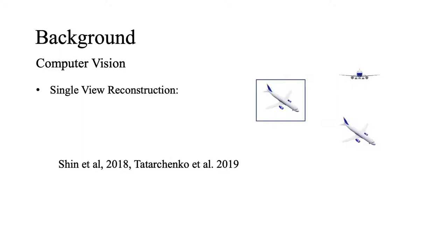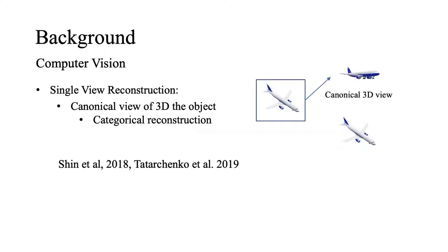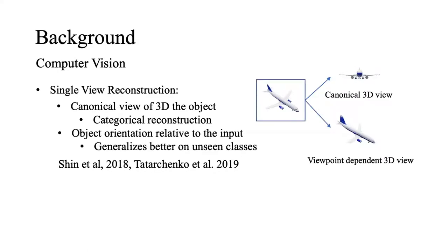single-view reconstruction is becoming a hot topic. Shane and Tatarchenko have classified them into two categories based on their output coordinate system. If a network outputs 3D shapes with canonical coordinate system, it tends to learn an average shape of each category. On the other hand, learning a final shape in the viewer-centered coordinate system tends to generalize better against unseen classes.